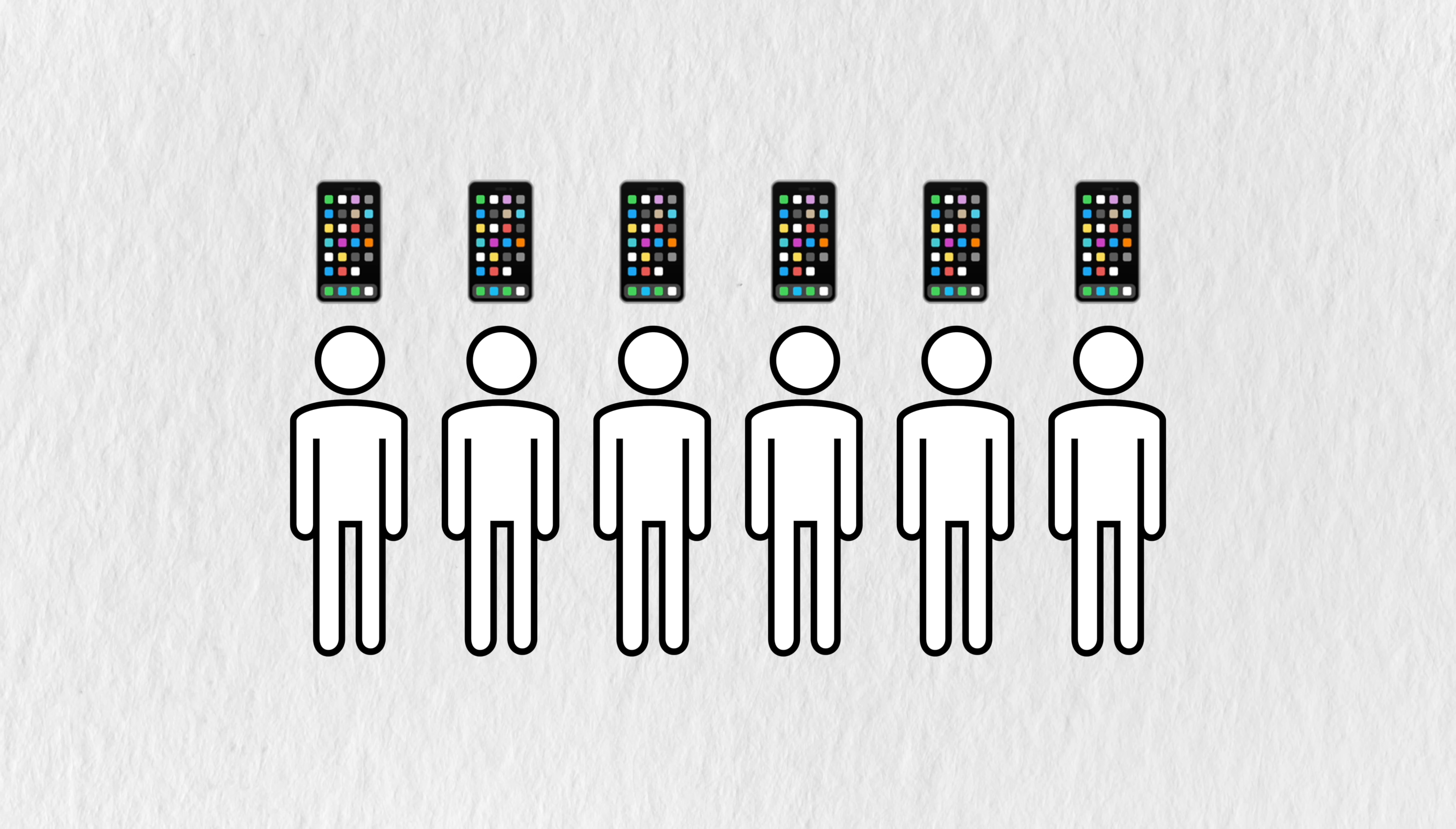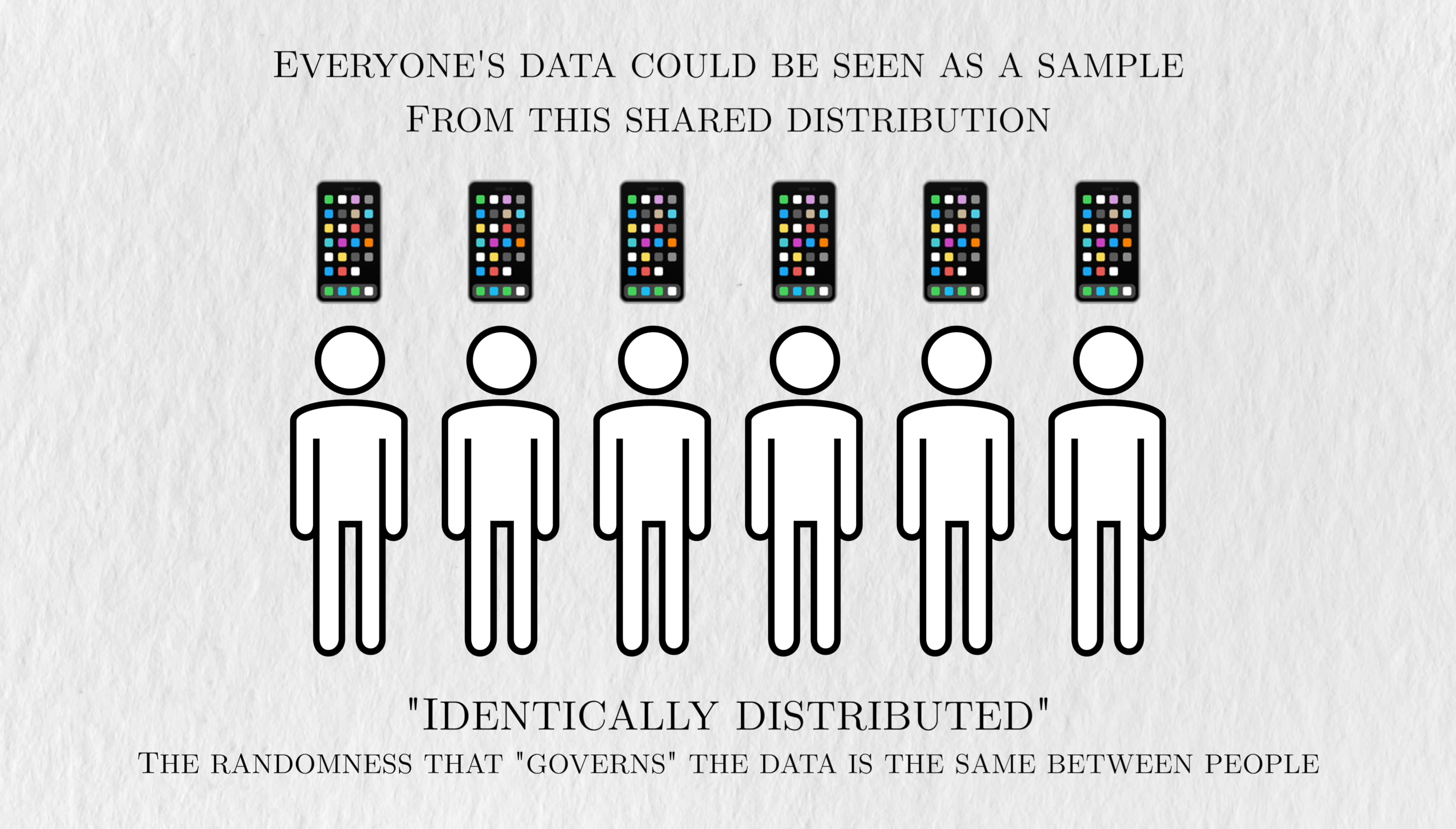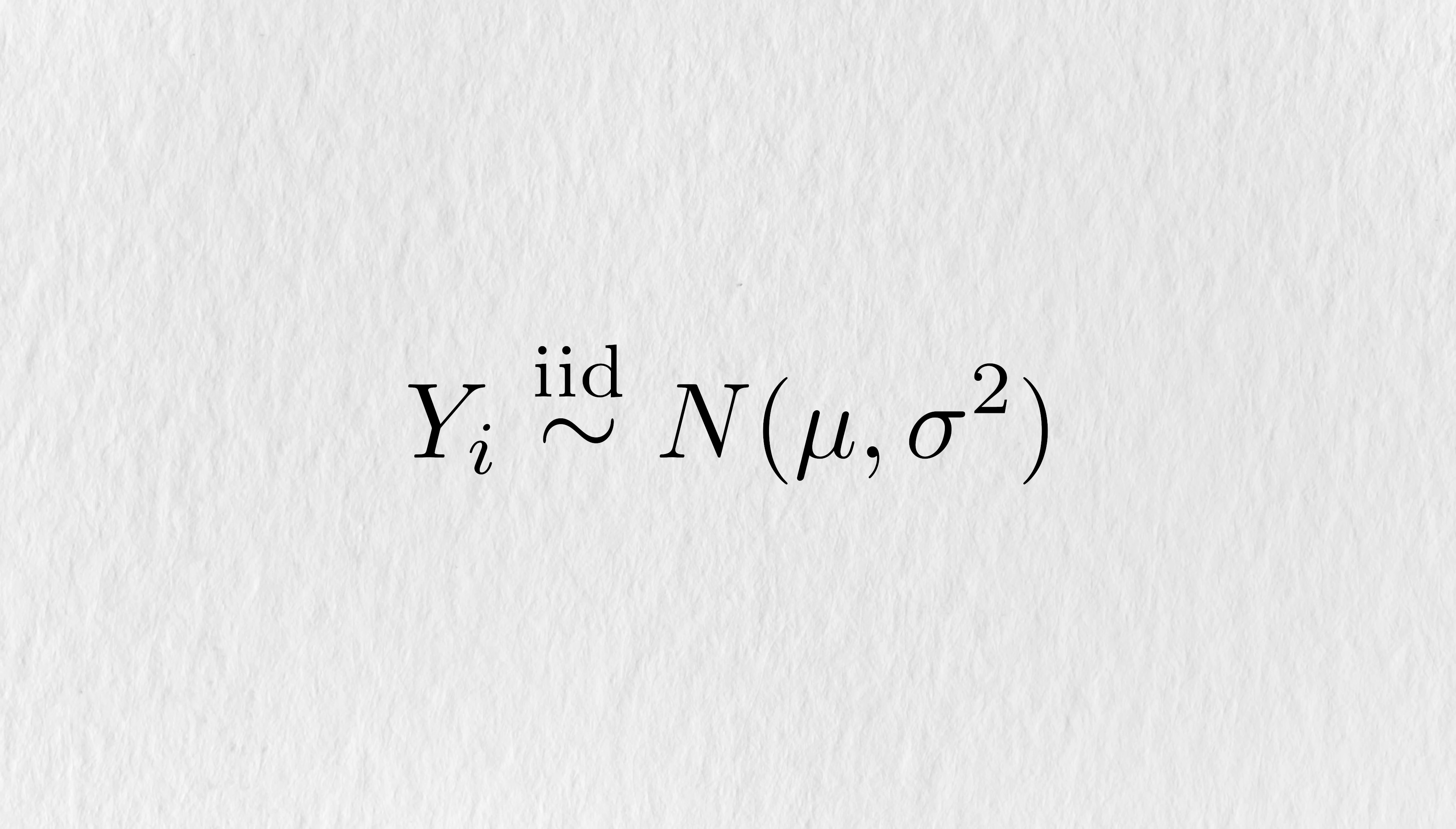The IID assumption consists of two parts. Independent means that one person's screen time can't influence or be influenced by any other person. If person 1 happens to spend more time on their phone when we observe their data, this shouldn't lead person 5 to increase or decrease their screen time. Identically distributed means that the underlying probability distribution that governs the randomness of screen time is the same for each person. For example, we might use a normal distribution with a large positive mean and some variance to model randomness in the screen time. Under the identical distribution assumption, everyone's screen time would be seen as a sample from this distribution, and we could write this idea succinctly as follows.